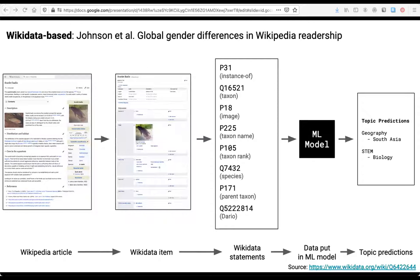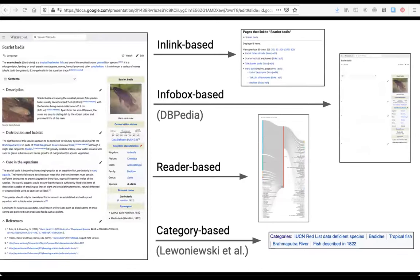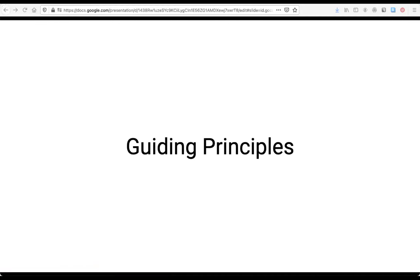And there are other approaches, Wikidatabase. So ignore the Wikipedia article entirely. Instead, look at the article's associated Wikidata item and the statements it contains. Use those for the modeling. We can keep doing this exercise for at least a few other approaches. So you can see there are a lot of ways that one might and many have approached this problem. So how do we choose the outlinks based approach? Well, we did it based upon the following guiding principles.